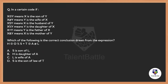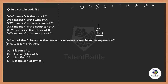Moving on to the next question, which is from Blood Relations. Most of the time symbols mean the same, like the first person is related to the second person. Here x @ y means x is the son of y, but x # y means y is the wife of x — there is a small twist. So we must be very careful. The expression is: H @ O % S + T @ A # L. H @ means H is the son of O.